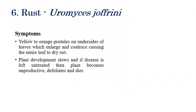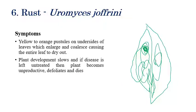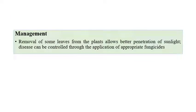Rust is caused by Eromasis jaffroni. Rust pustules appear on the lower surface of leaves, causing the leaf to shrivel, become dry, and weaken. In later stages, the leaves will fall off. The major symptom is the appearance of orange-brown to red color rust pustules on the lower surface of the leaf. Management includes removal of infected leaves and spraying with appropriate rust fungicides; copper oxychloride can also be applied.